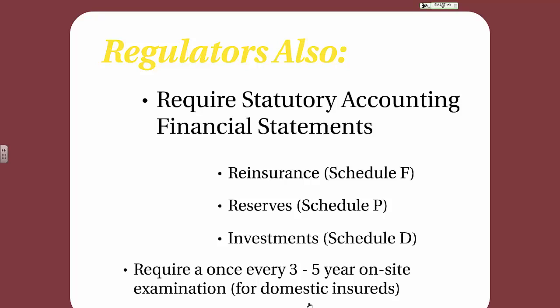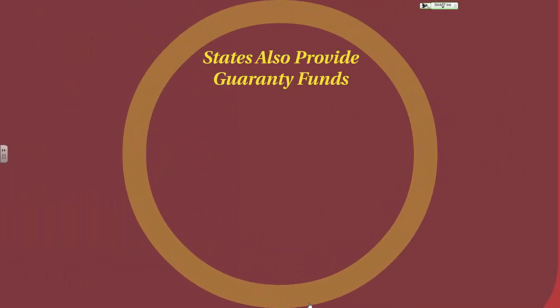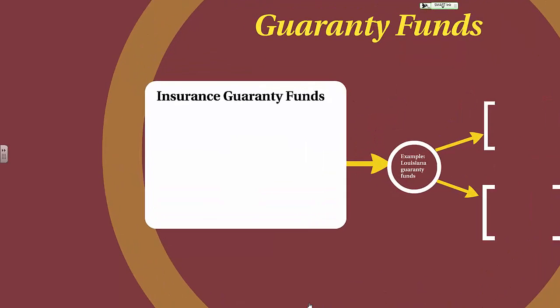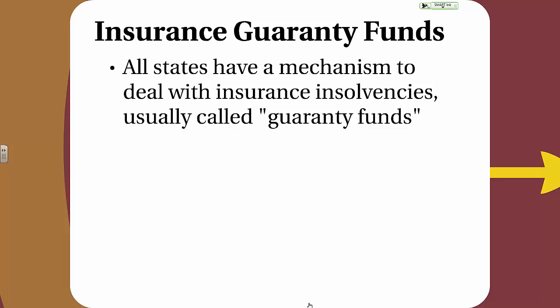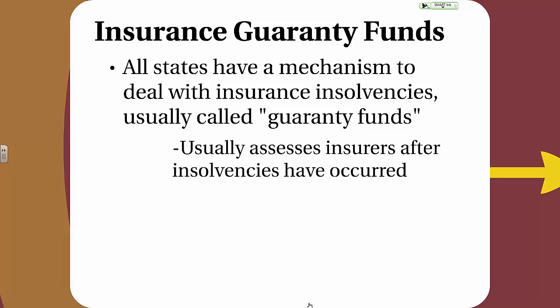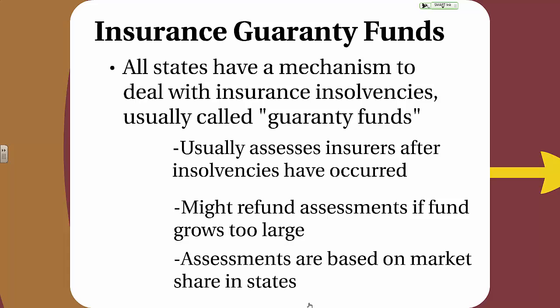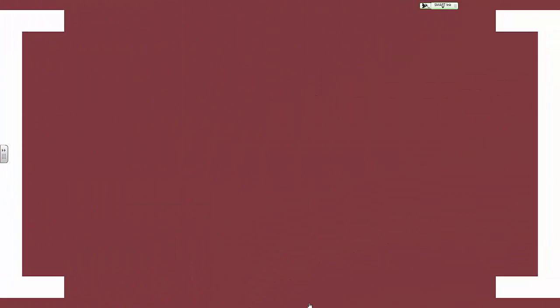Regulators also require a once every three to five year on-site examination for insurers domiciled in their state. States also provide guarantee funds — all states have a mechanism to deal with insurance insolvencies usually called guarantee funds. They usually assess insurers after insolvencies have occurred and might refund assessments if the fund grows too large. Assessments are based on market share in the state — for example, if an insolvency requires an assessment for $1 million and a particular company has 25% of the market share, the assessment for that company will be $250,000, or 25% of the $1 million.